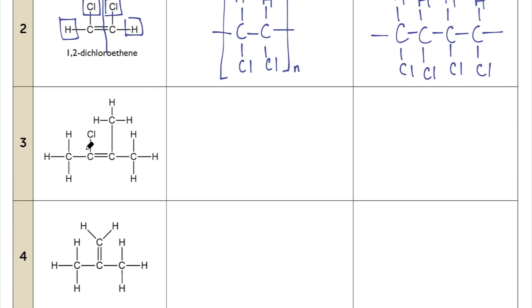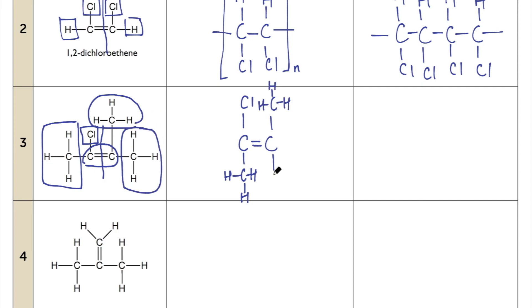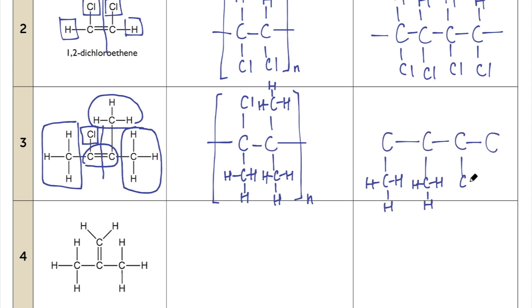For question three, again we identify the C=C double bond and draw it in first. On the left, this carbon is joined to its substituents; on the right, this carbon is joined to its groups. Remove one bond, join to the left and right. Always check your answer — each carbon should have four bonds. For two repeating units, just draw it twice.